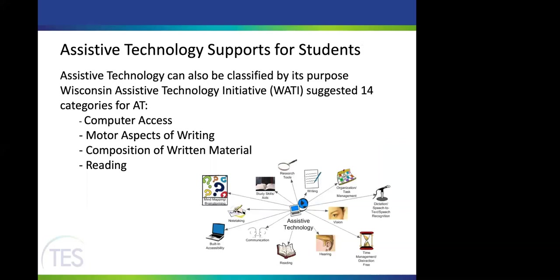Another way to define assistive technology is by its purpose. The Wisconsin Assistive Technology Initiative, also called WATI, created 14 categories to describe assistive technology. It's an amazing website with great resources if you want to learn more. Today we'll cover four of those areas: computer access, the motor aspects of writing, composition of written material, and reading.